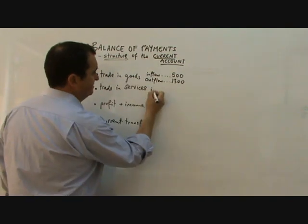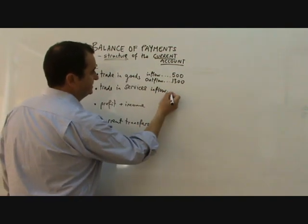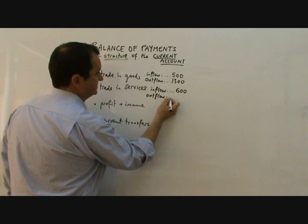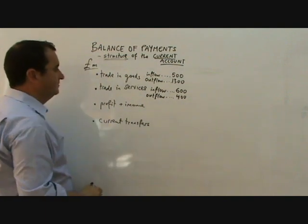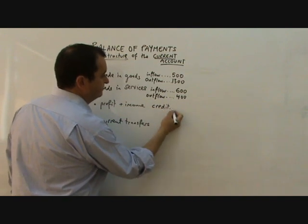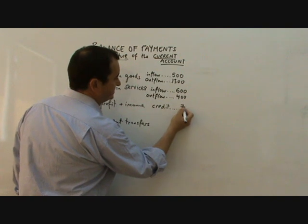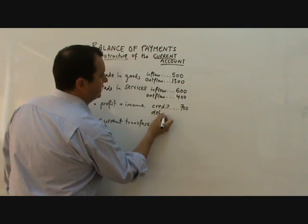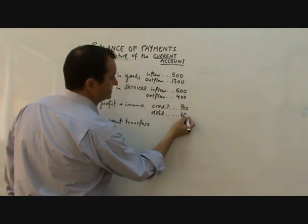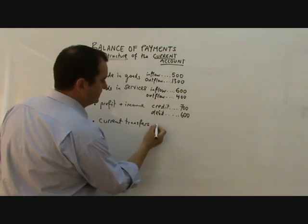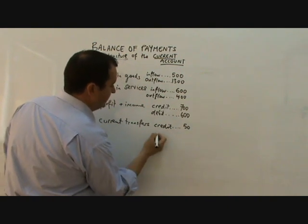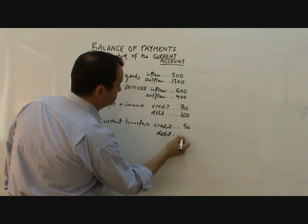The same thing for trading services: there will be an inflow as we sell services — let's say that's 600 — but there's an outflow as we buy services; let's imagine that's 400. For profit and income, there's a credit as money flows back from British firms around the world — let's imagine that's 700 — and there's a debit as foreign firms in Britain send their money back to their home country; let's imagine that's 600. Current transfers are usually smaller numbers: let's say we receive a credit of 50, and the debit going out is 80.